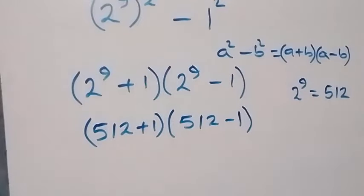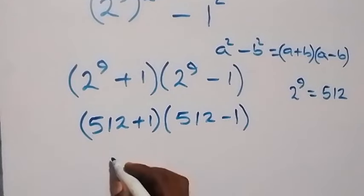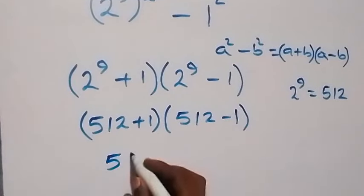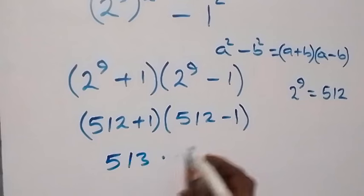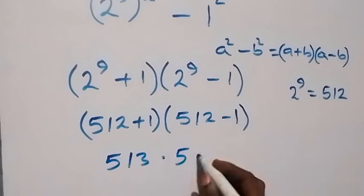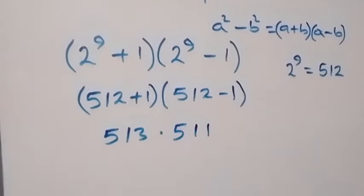Then, when we solve this from here, we can add this part and this will give us 513. Then, multiply by, here we have 511. And from here...